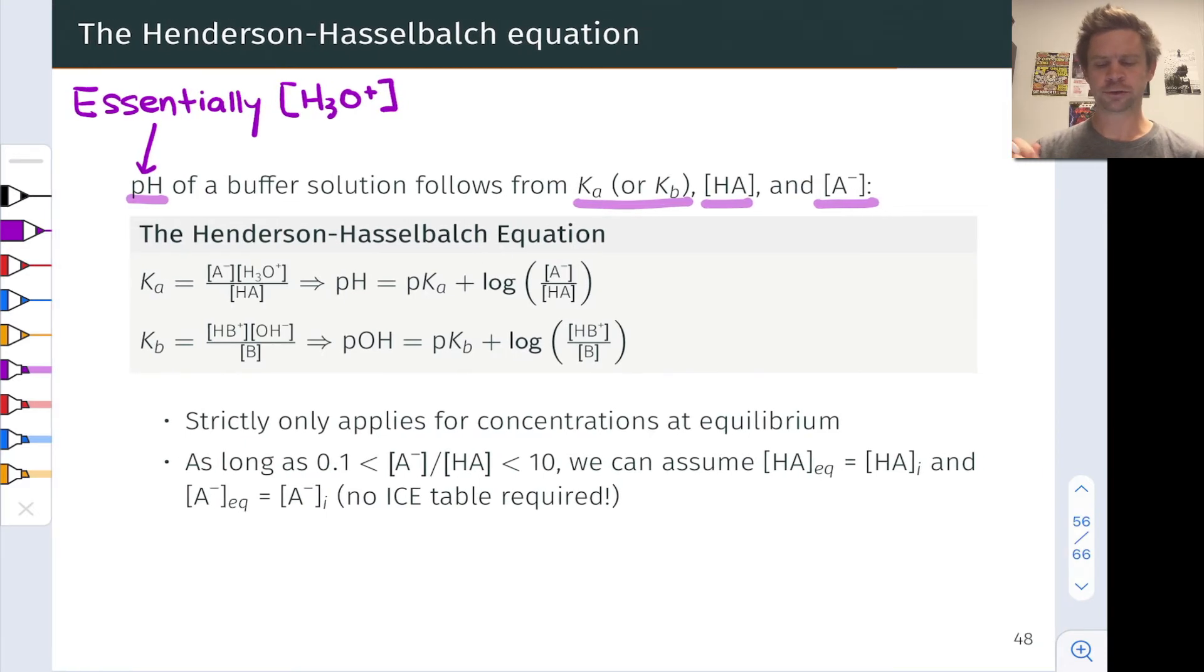Now both of these equations only apply if the solution we're looking at is actually a buffer. So the Henderson-Hasselbalch equation only applies when the ratio of the conjugate base to conjugate acid, or conjugate acid to conjugate base, is between 0.1 and 10. And the logarithm of this ratio, which is on the pH scale, is between negative 1 and 1. So this goes back to our requirement for a buffer system,